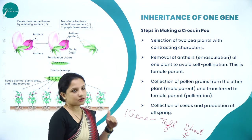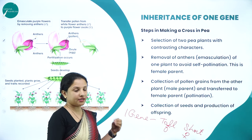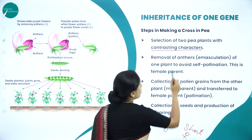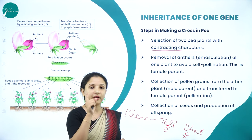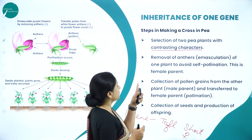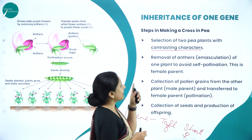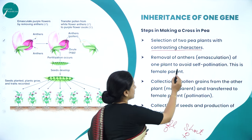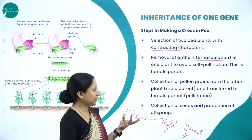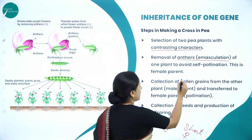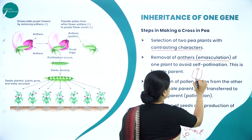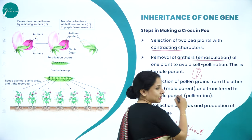The steps he took: first, selection of two pea plants with contrasting characters — he took a tall male plant and a short female plant. Second, removal of anthers, which is called emasculation, to avoid self-pollination. In a bisexual pea flower, both the androecium and gynoecium are present in the same flower, so the anthers must be removed.